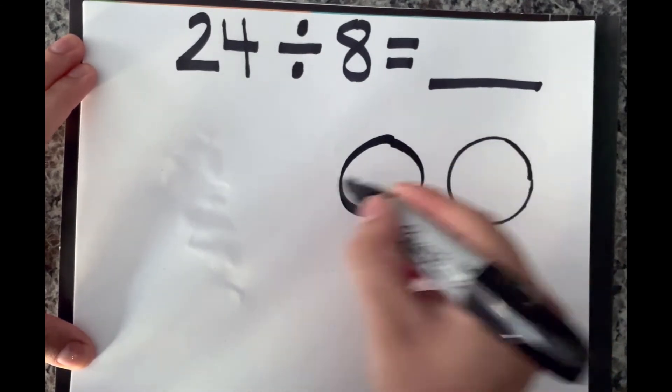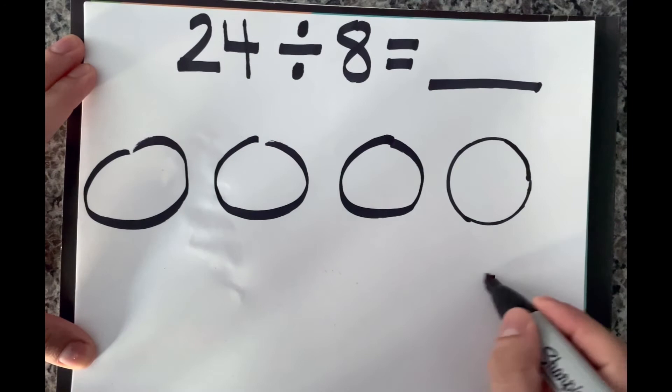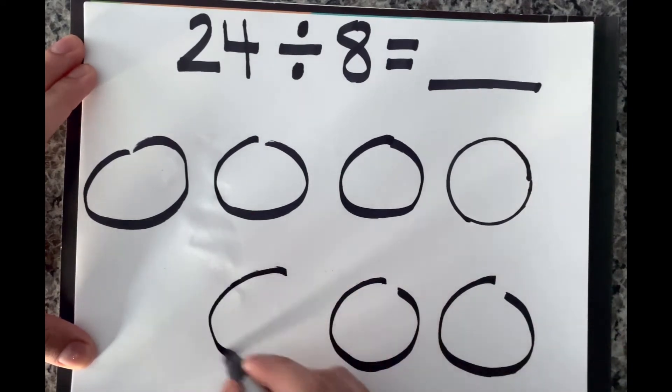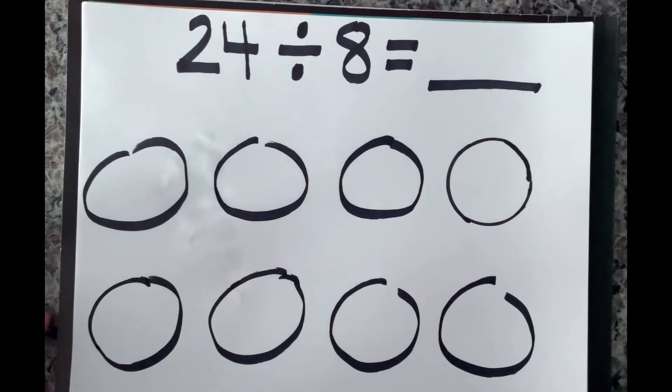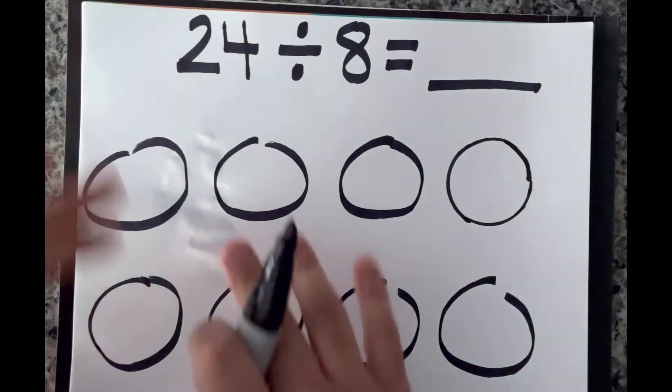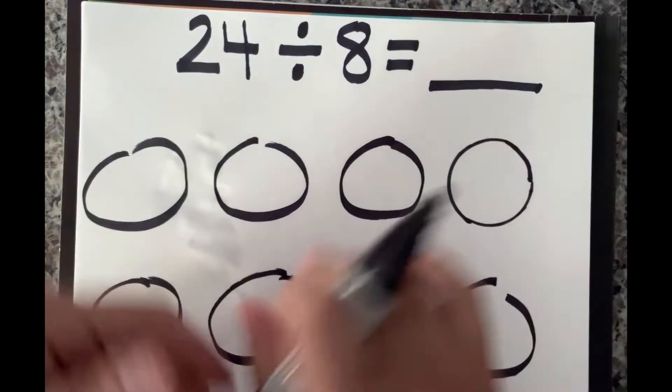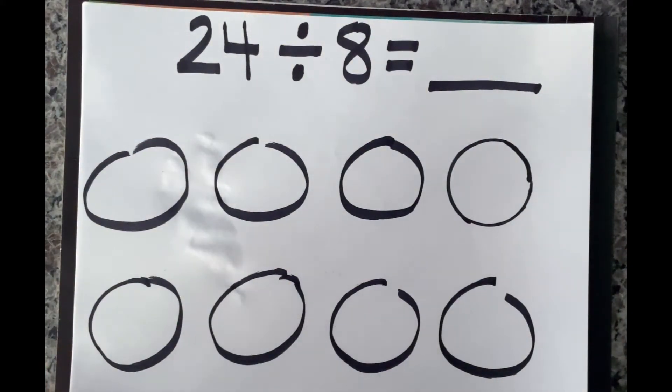One, two, three, four, five, six, seven, eight. All right, there are my eight equal groups, or my eight groups. Sorry, they're not equal just yet. They're eight groups.